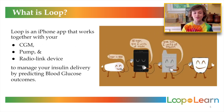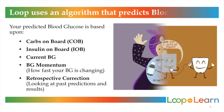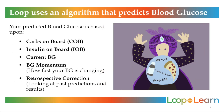Loop is an iPhone app that works together with your CGM, pump, and radio link device to manage your insulin delivery by predicting blood glucose. Loop predicts your blood glucose by using carbs on board, insulin on board, current blood sugar, blood sugar momentum, and retrospective correction.